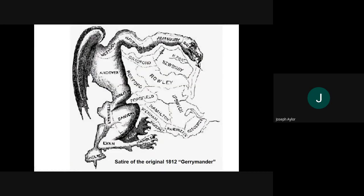This is a political cartoon that has shown up, and it's worth knowing because it could come out on an AP exam. If you see this, they are talking about gerrymandering. A guy by the last name of Elbridge Gerry was the first one to really do this in New York, and this was the district that was drawn. It's shown here just for reference.